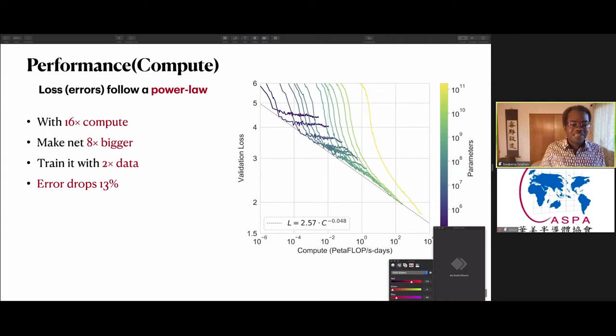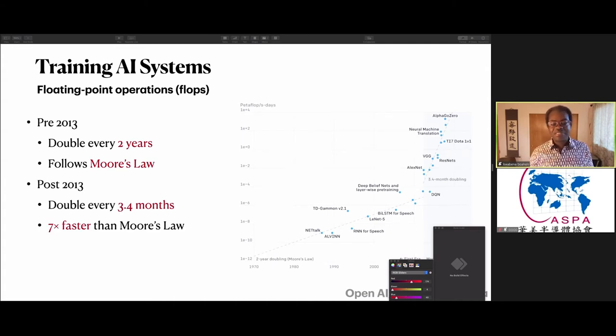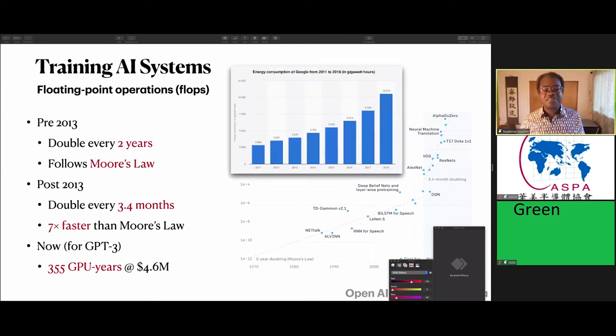This is a very compute-intense business. We can see here the trend. Before 2013, the compute we were using to train these neural networks was doubling every two years, following Moore's Law. Post-2013 has been doubling every three and a half months, seven times faster than Moore's Law. We are now at the point where to train GPT-3 takes 355 GPUs running for a year, and at market rates, that's 4.6 million dollars. We've seen a three-fold increase in the energy consumed by Google's data centers over the last seven years. We need much more efficient computing. In other words, with the same amount of energy, we'd like to do a lot more compute. There are real startups you've heard about earlier from other speakers that are trying to optimize their ASICs and so forth dedicated for this kind of compute.